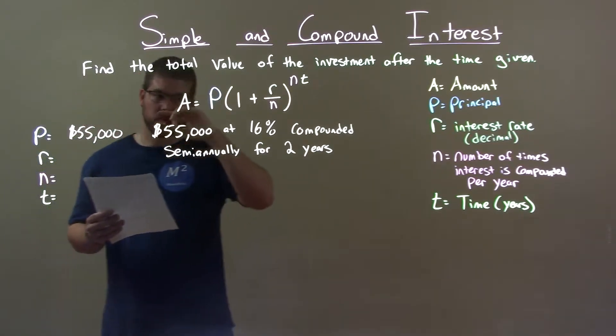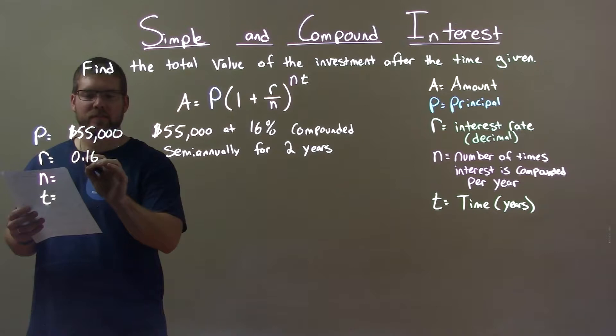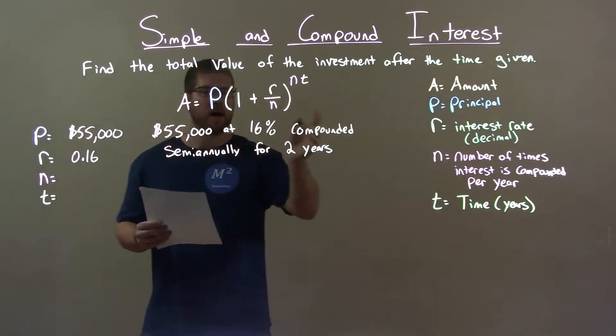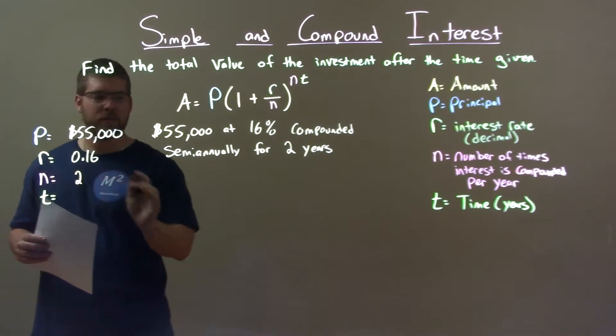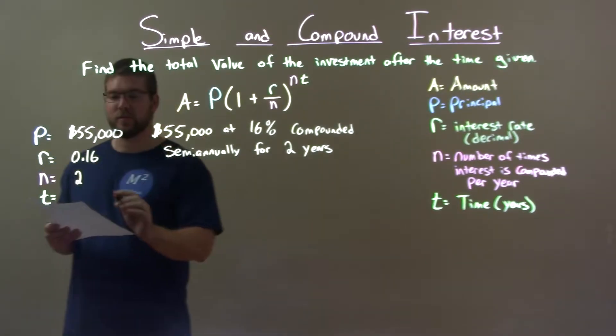My interest rate as a decimal is 0.16, that's 16%. Compounded semi-annually means we compound twice in a year. N is 2 and the number of years is 2.